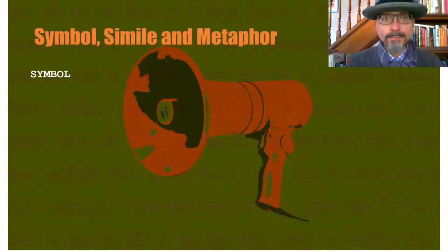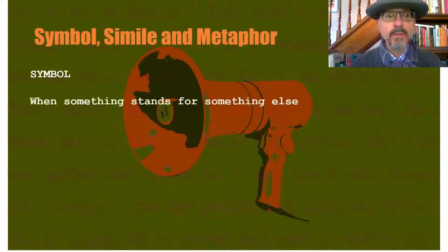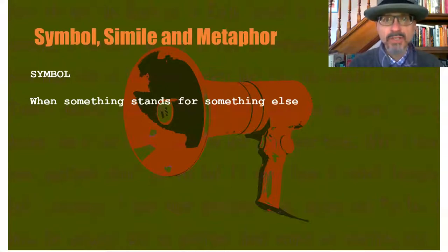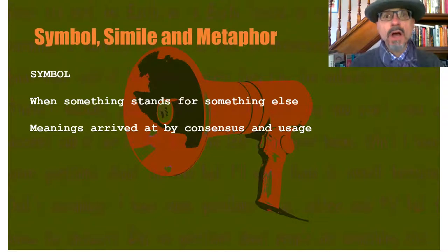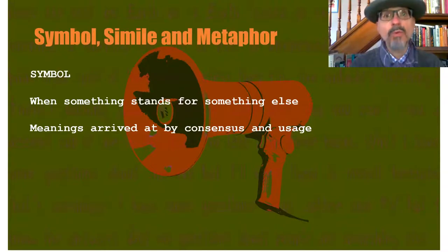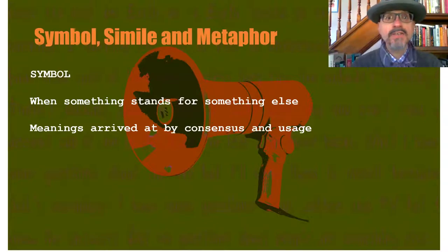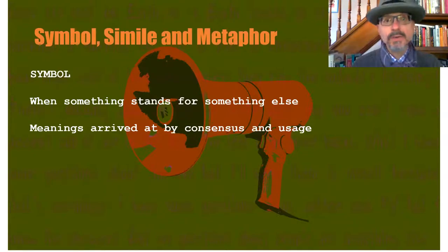Today we're going to be looking at symbol. What is involved with symbol is when something — an element in the poem, usually a visual image or an auditory image, some sensory image in general — stands for something else. These meanings are generally arrived at by usage and consensus. In other words, these are time-honored usages, things that have come down in popular culture and lasted a very long time. It's going to be interesting to see how meme culture nowadays from the internet is going to quicken the pace of the formation of new symbols, but also hasten the decline of some that get constructed.